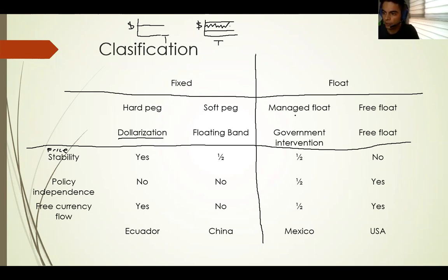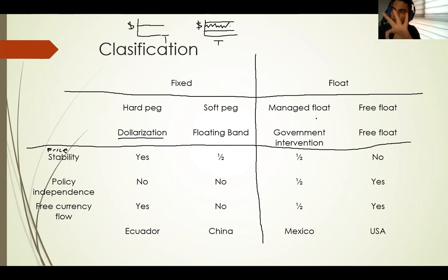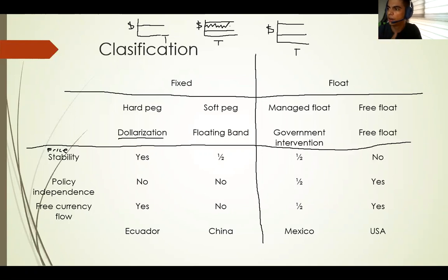So in a managed float — managed float is the name of the third system — we have something similar to a price-time chart. We also have some bands or limits that the government sets on its own.